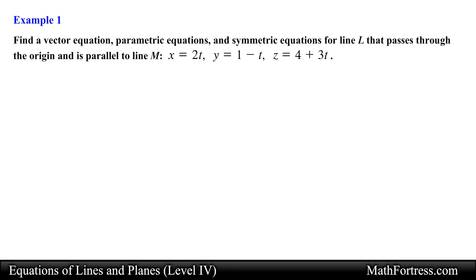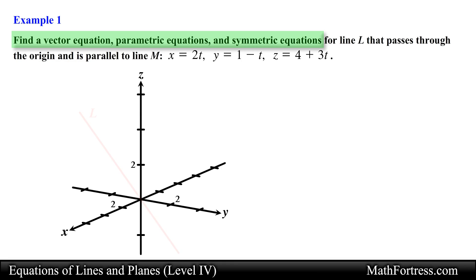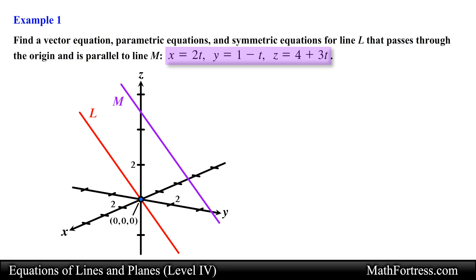Find a vector equation, parametric equations, and symmetric equations for line L that passes through the origin and is parallel to line M. We are asked to find vector, parametric, and symmetric equations of a line that passes through the origin and is parallel to line M. Notice that we are provided with the parametric equations of line M, and we are going to use these to determine the equations for line L.